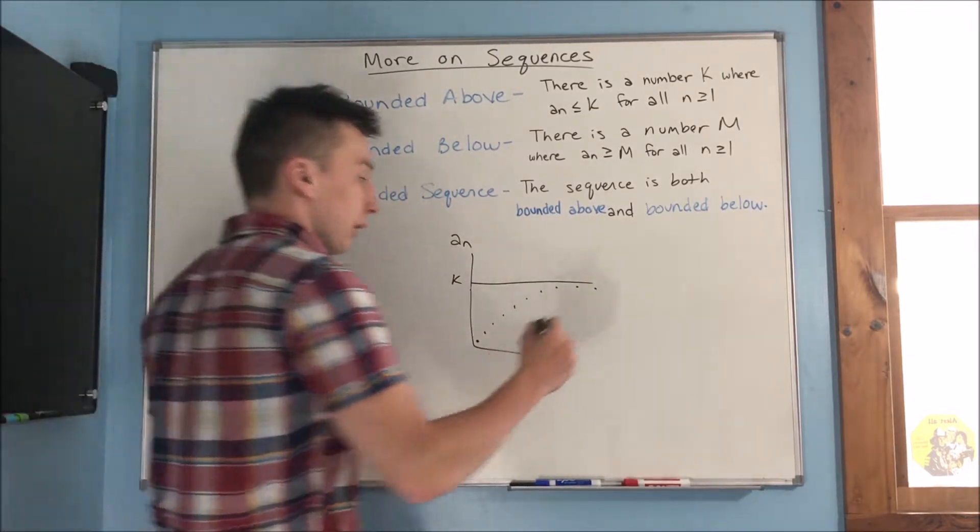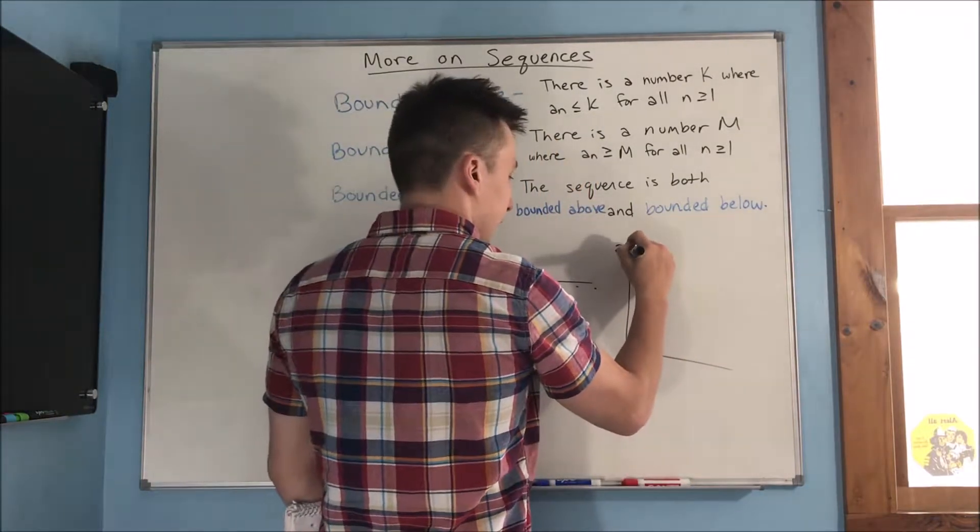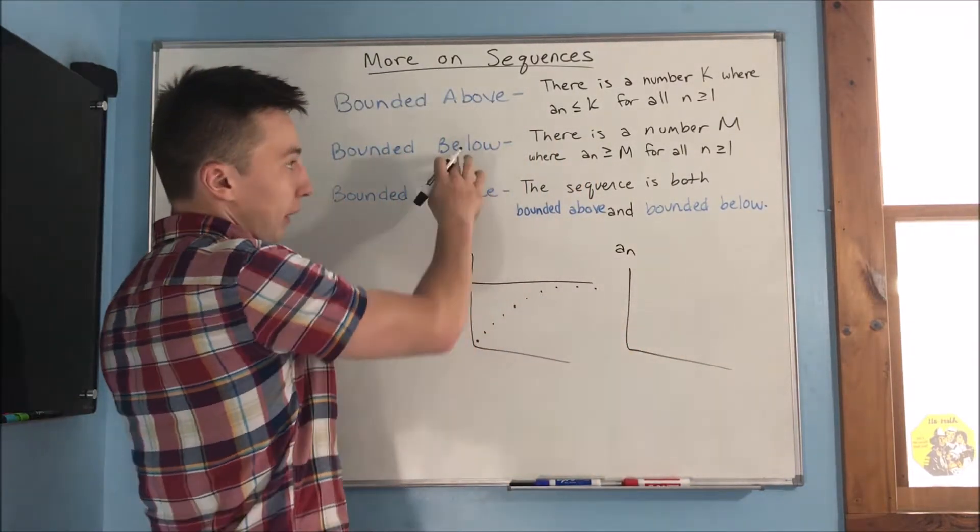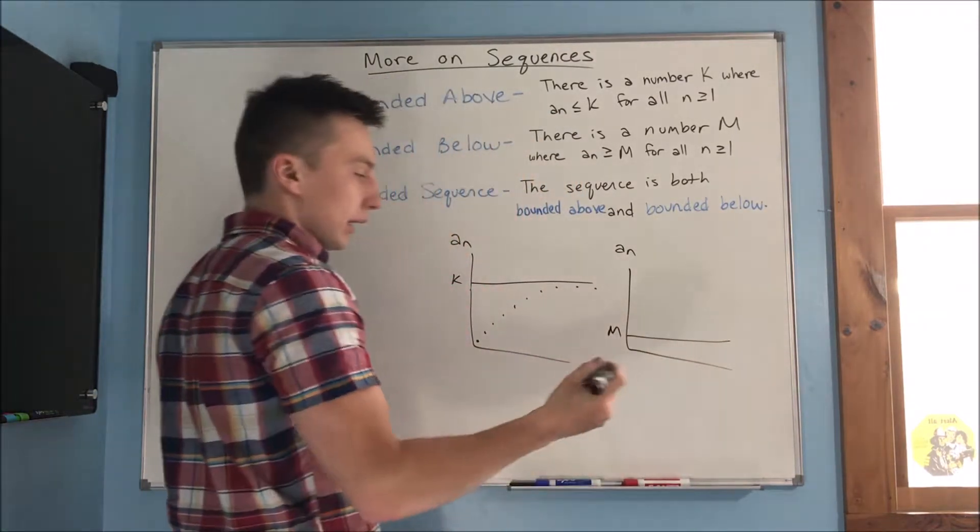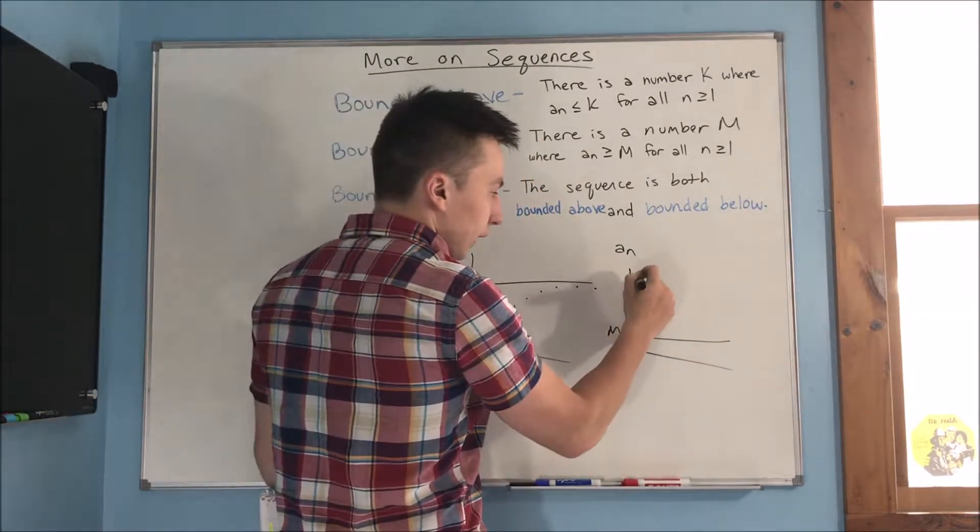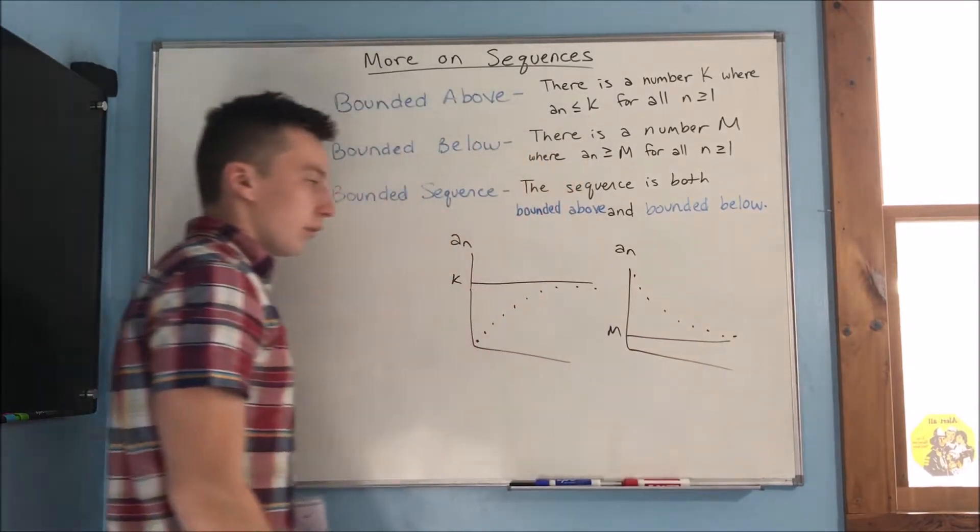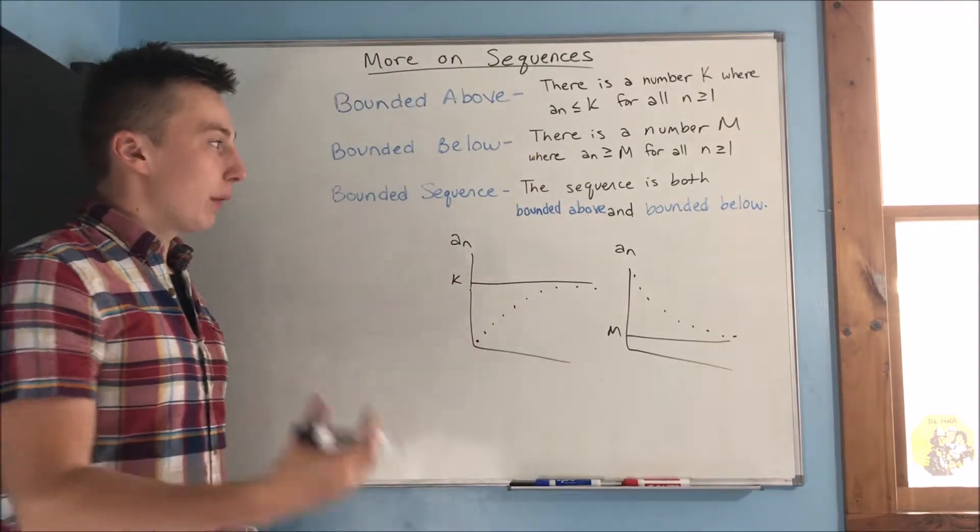Now, bounded below is going to look like something like this. So, it's bounded below. Let's say we have a number m, something like that. Well, it's never going to touch m. All right? So, that is bounded below.